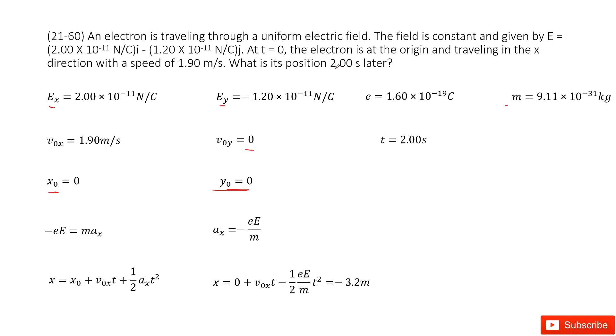And then what is the position at 2 seconds later? So time is given as 2 seconds. This is all the given quantities. Now we need to find the position. First, we need to find the x component for the position.